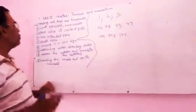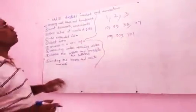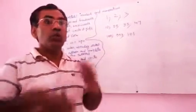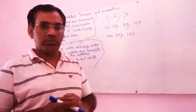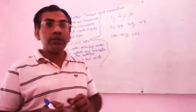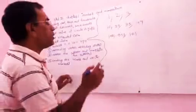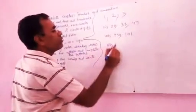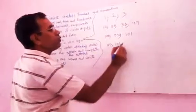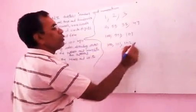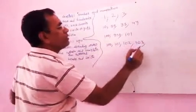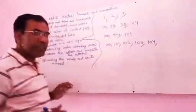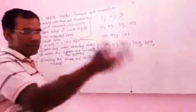Now I am going to teach you topic number 2: counting forwards and backwards. Forward means going ahead — each number you add 1. For example, starting from 101: forward is 102, forward is 103, forward is 104. Similarly you can write other numbers.